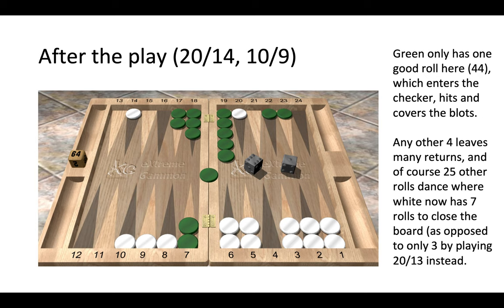If instead we played 20 to 13, then we would only have three numbers to make the four point. So here, even though we are told not to leave blots on both sides of the board, we take a little risk of green potentially rolling a double four to have a much bigger reward—having seven rolls as opposed to three rolls to close our four point. It may look risky, but the payoff is simply better. Yes, five blots around the board, but it's strategic—it diversifies our numbers to make the four point and green is in a vulnerable position.